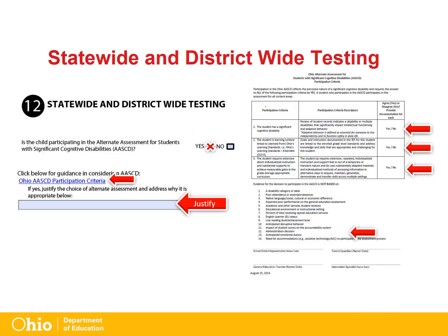The form lists what evidence the decision to participate is not based on. This list needs to be considered before determining the student will participate in the AASCD. All signatures — including district representatives, parents, guardians, general education teachers, and intervention specialists — need to be included. This document must accompany every IEP and must be discussed amongst the team whenever participation for the Alternate Assessment is being considered.